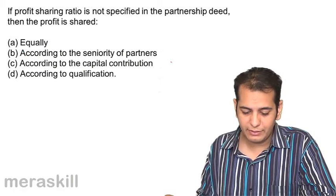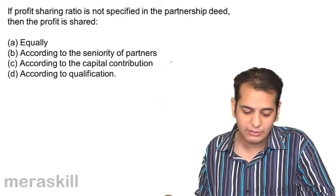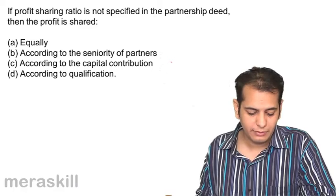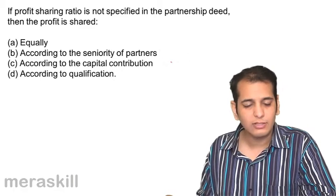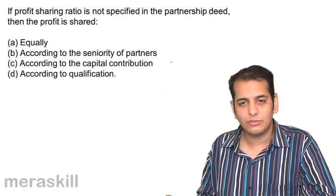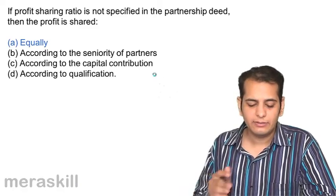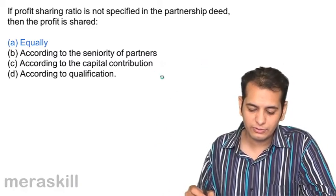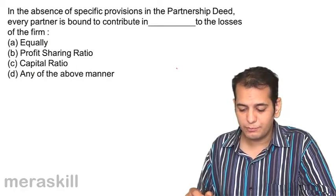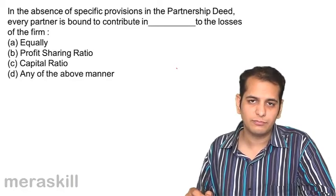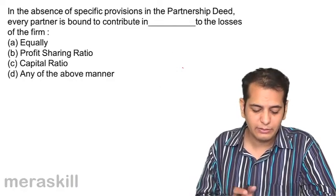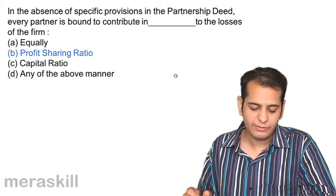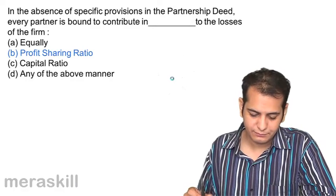If the profit sharing ratio is not specified in the partnership deed, profit is shared: a) equally, b) according to seniority, c) according to capital contribution, d) according to qualification. The answer is equally. Similarly, in the absence of specific provisions, every partner is bound to contribute to losses of the firm in the profit sharing ratio (PSR).